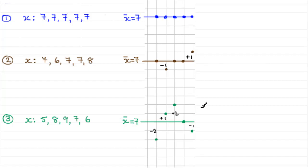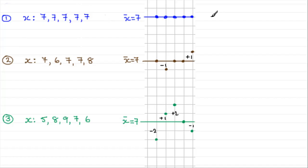These diagrams show the scattering of observations about the mean. The first set has no scattering, the second has slightly more, and the third has much more. In statistics, we want a measure of this scattering about the mean — it's called the standard deviation. The symbol for standard deviation is sigma, written as σ.